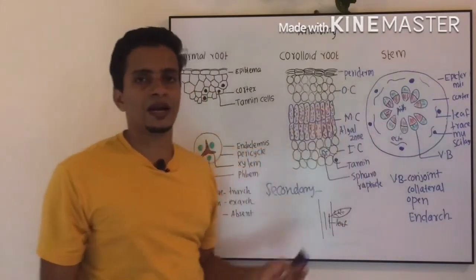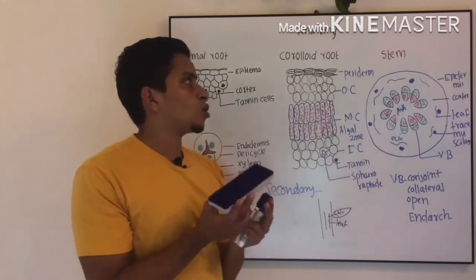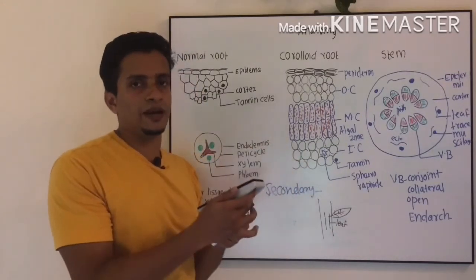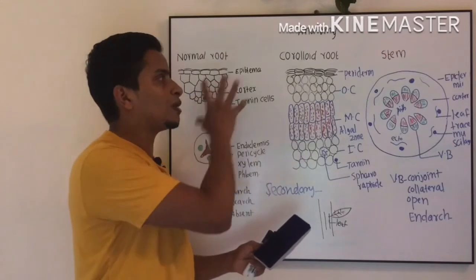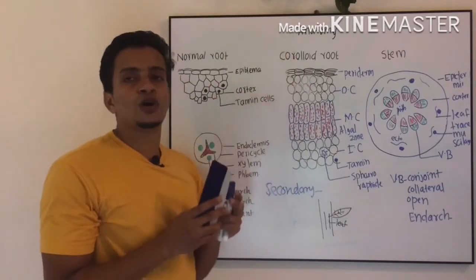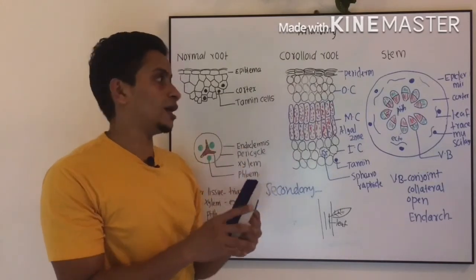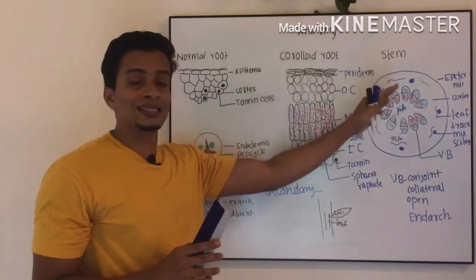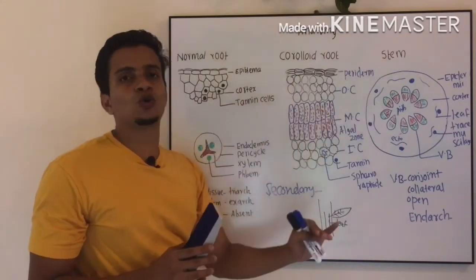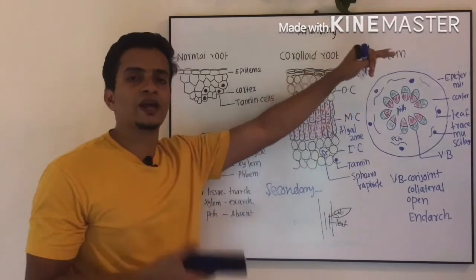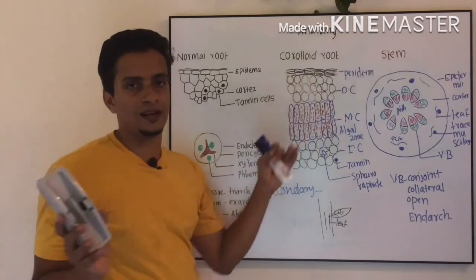So this is about the internal anatomy of root, coraloid root, and stem. Now let's see secondary growth. Root undergoes secondary growth, stem undergoes secondary growth. Coraloid root shows poorly developed secondary growth. Normal dicot root shows secondary growth. Stem is normal dicot stem secondary growth.